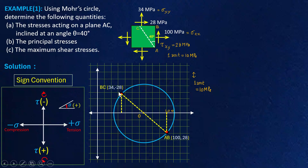Please remember: to make any Mohr circle, at least two planes should be known — meaning we know the corresponding stresses acting on two planes. So now we have two planes AB and BC, and passing through these two points we have the Mohr circle.